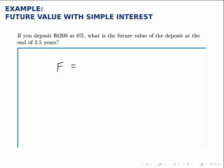So the future value formula is that the future value, F, is equal to the principal or the present value, P, times one plus the interest rate times the time in years.